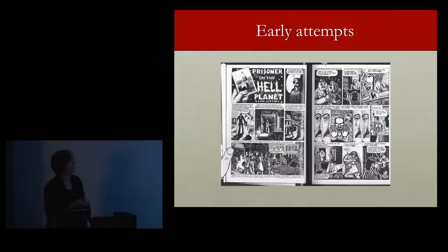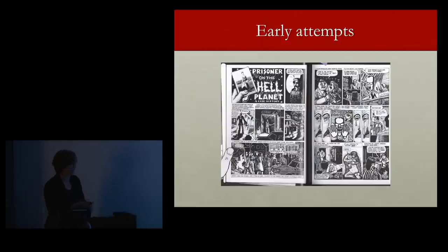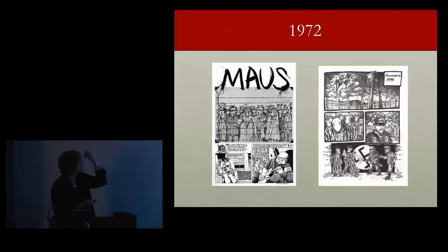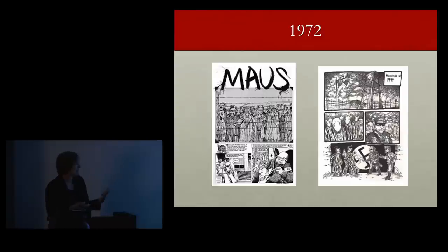An early attempt was Prisoner on the Hell Planet, which is included in one of the Maus books — very different from what you know of Maus. It's not little mice or cats; he was using people, kind of creepy demonic-looking figures, to tell the scary story of his mother's suicide. Another early attempt did start working with mice and cats — it appeared in a graphic journal he had called Raw. The cats were creepier, the mice were mousier. He was playing around with it. I think it's interesting for you to think about the fact that it's not just brilliant from the get-go; you might have to play around and try different approaches to figure out what works for your piece.